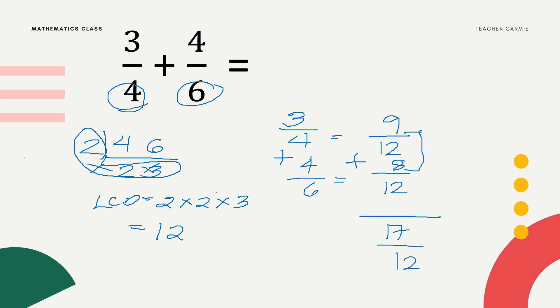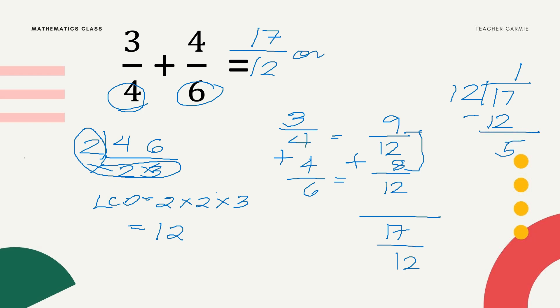17 over 12 is called an improper fraction, so we need to change it into a mixed number. We divide the numerator by the denominator: 17 divided by 12. We divide the numerator and copy the denominator. The answer is 1 and 5/12.